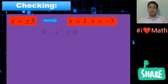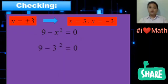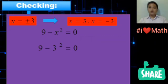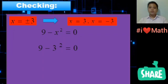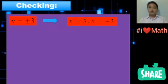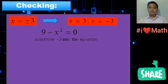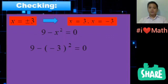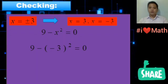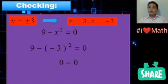We will use positive 3 first. Substitute 3 into the equation: 9 - 3² = 0, which gives 0 = 0. Now we will use negative 3. Substitute -3 into the equation: 9 - (-3)² = 0, which gives 0 = 0. Both positive and negative 3 satisfy the equation 9 - x² = 0. That makes our answer correct.